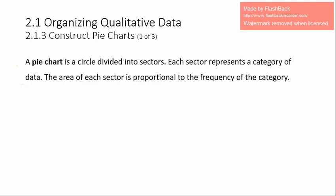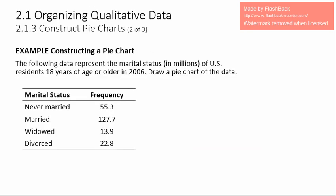Another form of organizing qualitative data is to construct pie charts. A pie chart is a circle divided into sectors, where each sector represents a category of data. The area of each sector is proportional to the frequency of the category. Using marital status data for U.S. residents in 2006, we first create a relative frequency distribution, then draw the pie chart using Excel. I will show you how in a separate video.